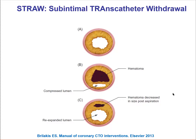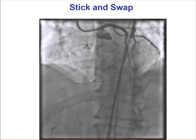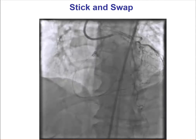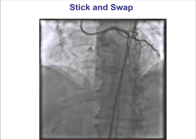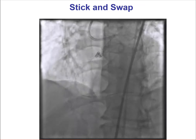This diagram shows how subintimal hematoma can compress the distal true lumen, and then by aspirating the hematoma — which can also happen through the Stingray balloon — the lumen can be re-expanded, facilitating distal reentry. In this particular case, in spite of using the STRAW technique, the distal true lumen remained compressed.